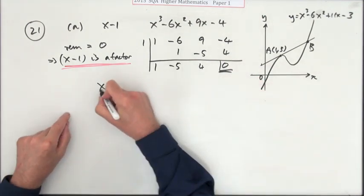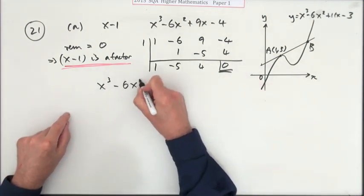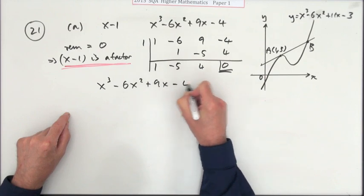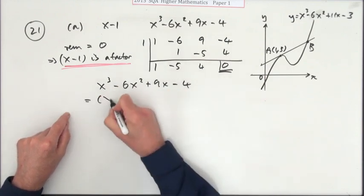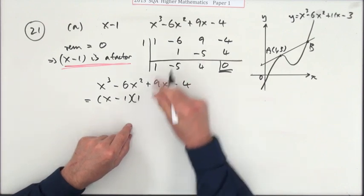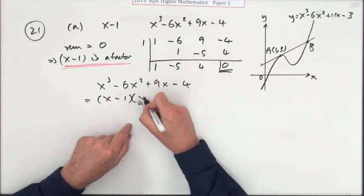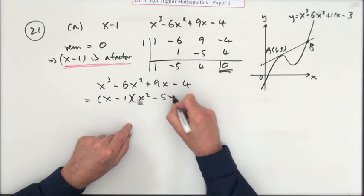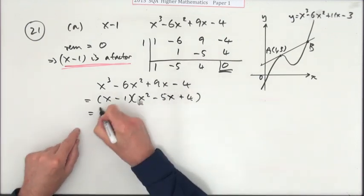Factorize it fully - I'll just pop it down. That means that x³ - 6x² + 9x - 4 is equal to (x-1) times the quotient there, the number of times it went in.